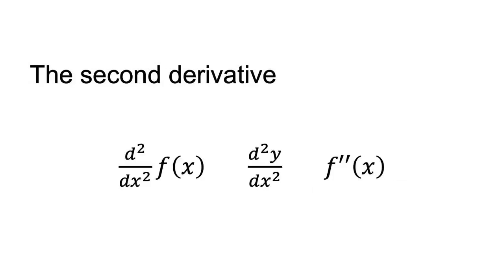The second derivative of a function is a measure of the curvature of the function, or the rate of change of the slope. We can calculate the second derivative by taking the derivative of the first derivative. We can use the second derivative to determine whether a function is concave or convex. A function is concave if the second derivative is negative, and convex if the second derivative is positive.